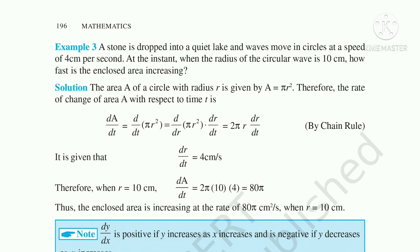Differentiating A = πr² with respect to time: dA/dt = 2πr · dr/dt. Substituting dr/dt = 4 and r = 10 cm: dA/dt = 2π · 10 · 4 = 80π cm²/s. So the enclosed area is increasing at a rate of 80π cm² per second when the radius is 10 cm.